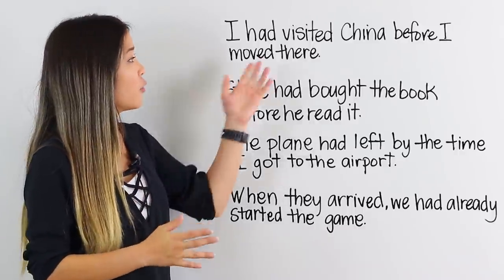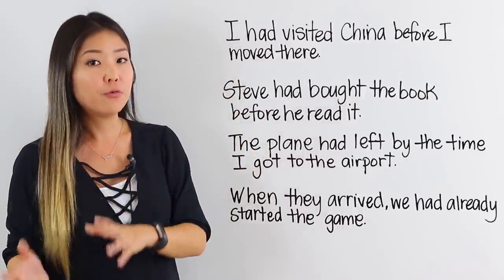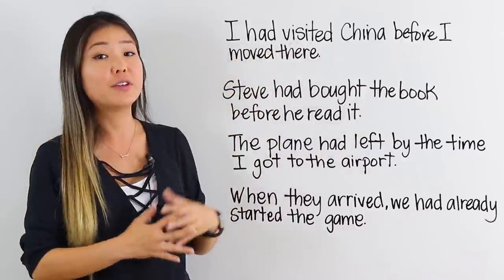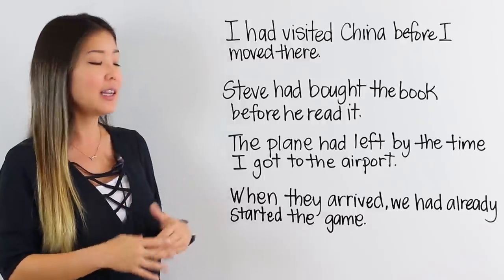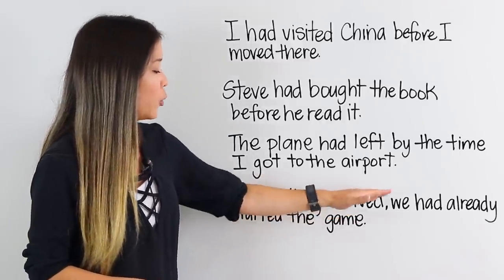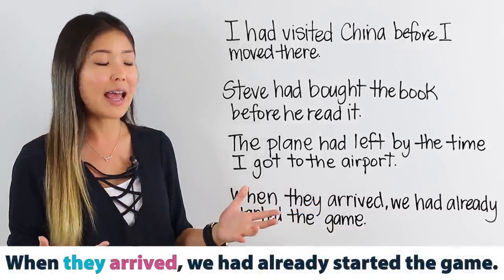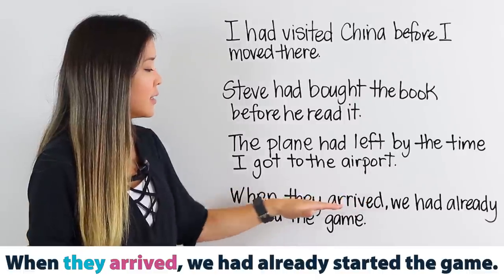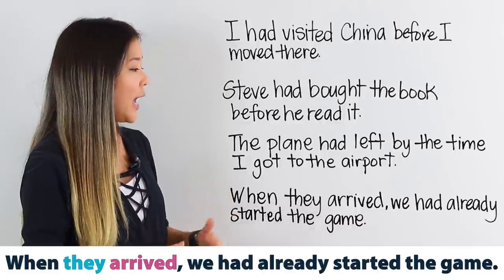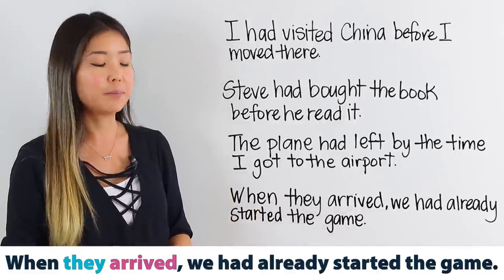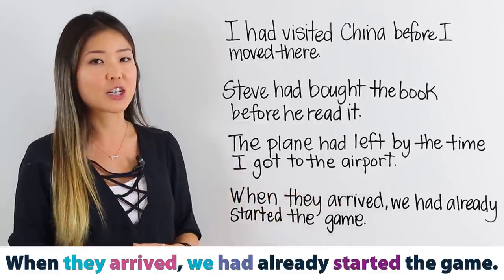For the first example, 'before I moved there' — that happened later. Before that, I had already visited China. Let's take a look at the last example: 'When they arrived, we had already started the game.' So maybe they were late or something had happened. 'When they arrived' is the past simple tense, so this happened second. 'We had already started the game' — this action had already started before that action.